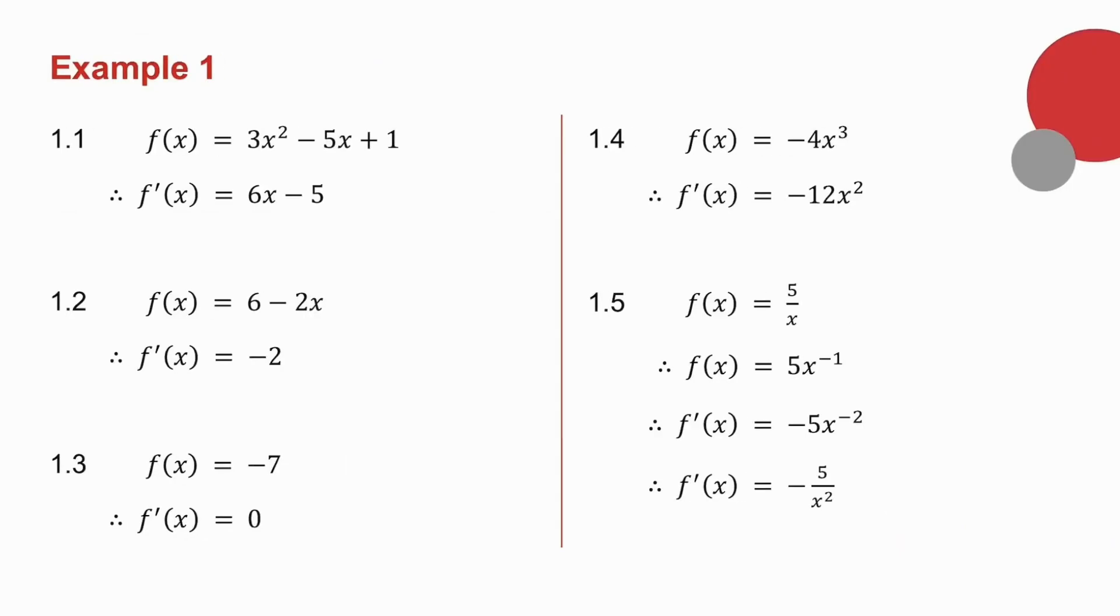Example number 1. 2 times 3, 6, and I subtract 1 from the power, so it becomes 6x to the 1. Derivative of minus 5x, it's a term in x, so the derivative is just the coefficient. Because this is x to the 1, and 1 times minus 5 is minus 5, and it becomes x to the 0, and minus 5 times x to the 0 is minus 5 times 1, which is just minus 5. And the derivative of a constant is 0. So there is nothing left.